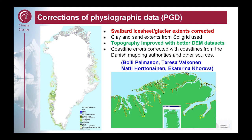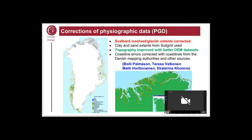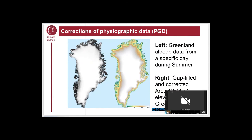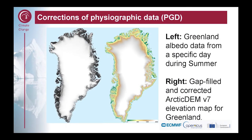There are actually huge discrepancies at the northernmost part of the world — Cap Morris Jesup area — as you can see here. Bartli Pamerson did a very great job fixing this. We used data from the Danish mapping authorities and many other sources to make sure we got this right. Similarly, Teresa Valkonen worked on Svalbard, where some glaciers have retreated, requiring changes to the land-sea mask. A lot of work was also done to input gap-filled and corrected Arctic DEM version 7 data, going through grid box by grid box to correct flaws and produce a reasonable elevation map for Greenland.